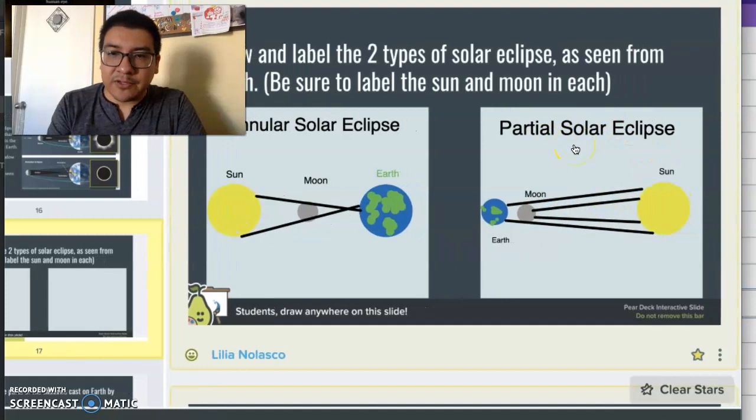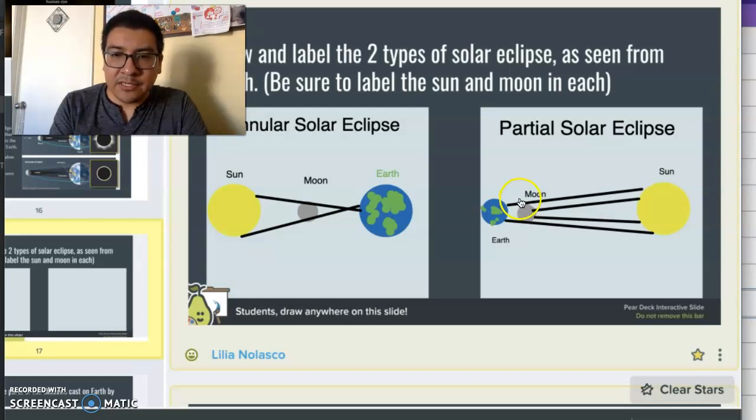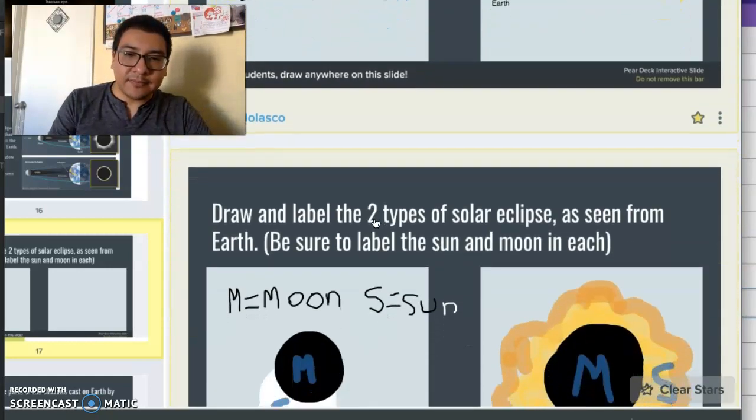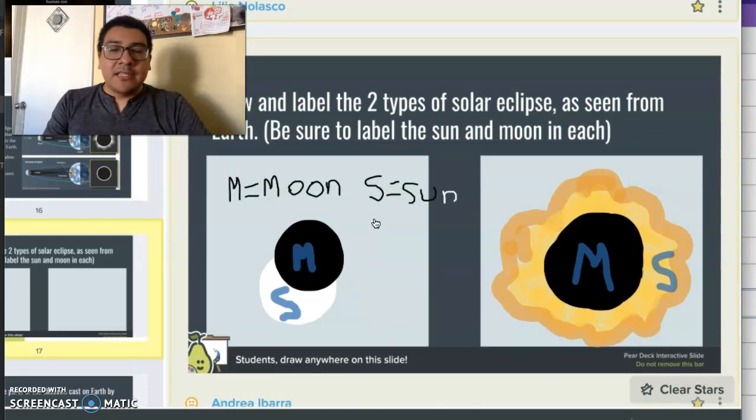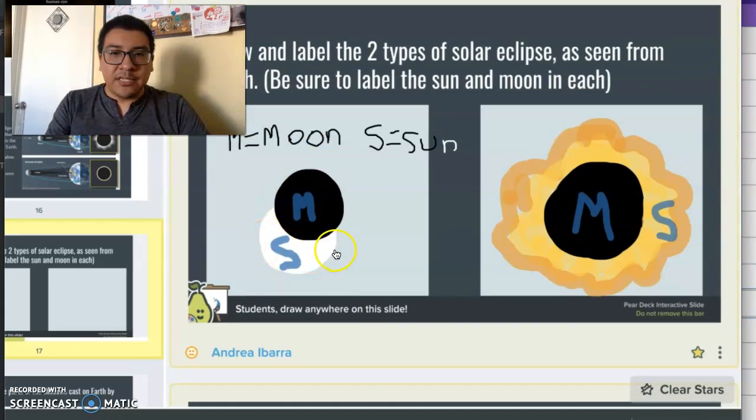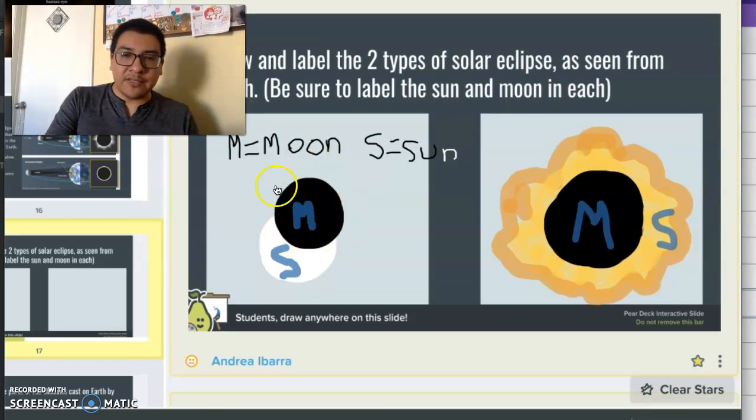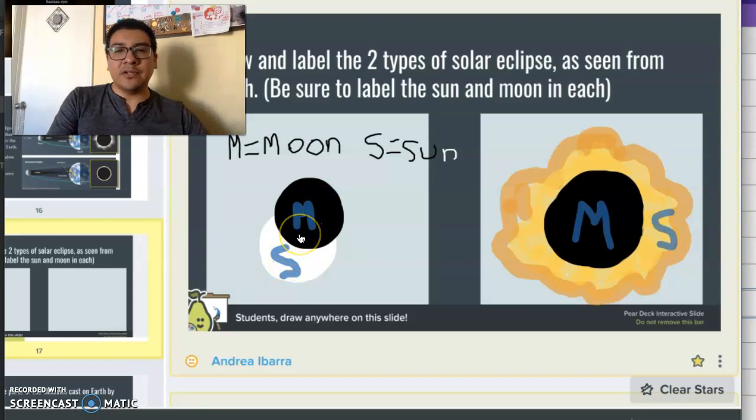And on the right side, we have a partial solar eclipse. And we can tell that because there's no umbra drawn in here. So I'm assuming these two lines on the sides that are hitting the Earth are the range of the penumbra.